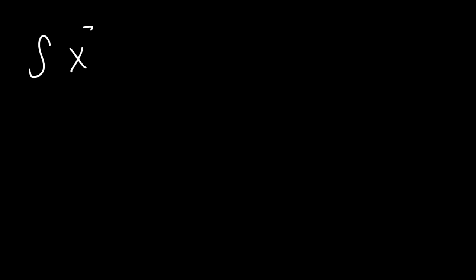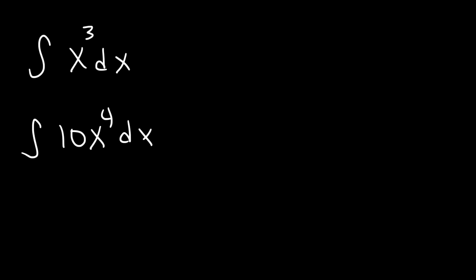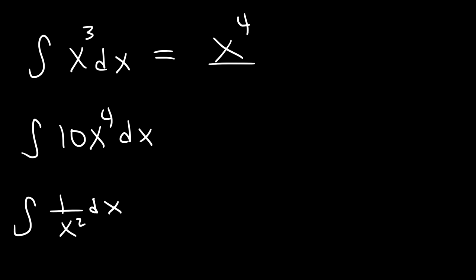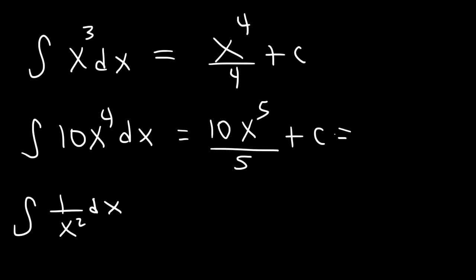Let's try more examples using the power rule — find the antiderivative of x cubed, 10x to the fourth, and 1 over x squared. For x cubed: 3 plus 1 is 4, so it's x to the fourth over 4 plus c. For 10x to the fourth: 4 plus 1 is 5, so it's x to the fifth over 5, but we can simplify — 10 divided by 5 is 2 — so it's 2x to the fifth power plus c.